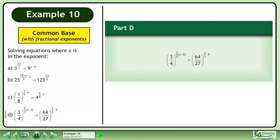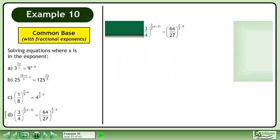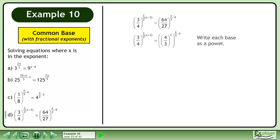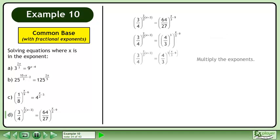In part d, solve 3 over 4 raised to the power of 2 over 3 times x plus 3 equals 64 over 27 raised to the power of x over 3 minus 9. Write each base as a power. Multiply the exponents. Simplify.